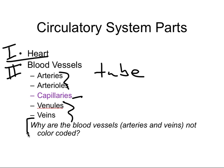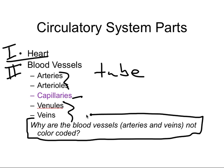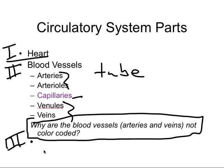A question to keep in mind as we go through this: why are blood vessels — arteries and veins — not color-coded? In other words, are all veins the same, and are all arteries the same? The third part of the circulatory system is the blood itself.